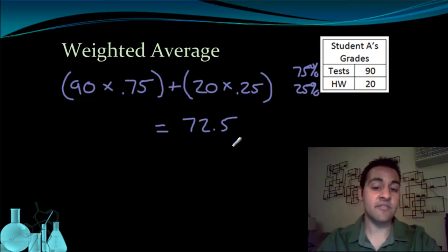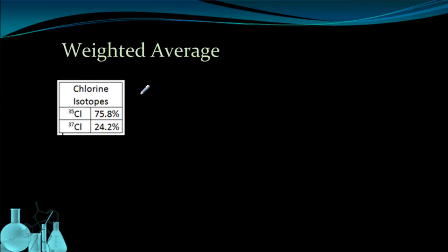Notice how this is significantly different than the 55 we got by doing just a regular average, which assumed that these two things were worth the same amount. Now let's go back to our isotopes, our chlorine isotopes, and see if we can come up with a weighted average of what chlorine's mass really is. So here are my chlorine isotopes: chlorine-35, 75.8%, and chlorine-37, 24.2%.